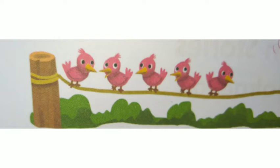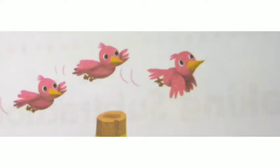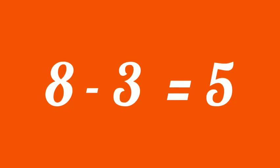5 birds are sitting on the rope now. 3 birds flew away from the rope. Therefore, from 8 birds, 3 birds fly away, then remaining is 5. So, 8 minus 3 makes 5. 8 is whole. 3 is part. Whole minus part equals part.